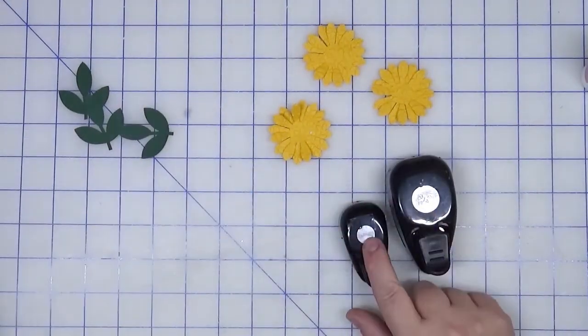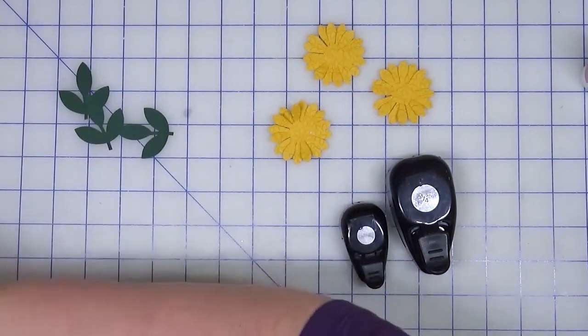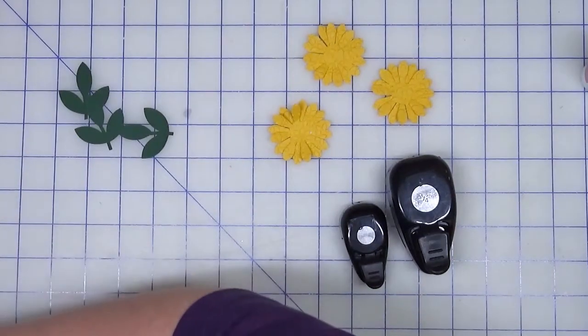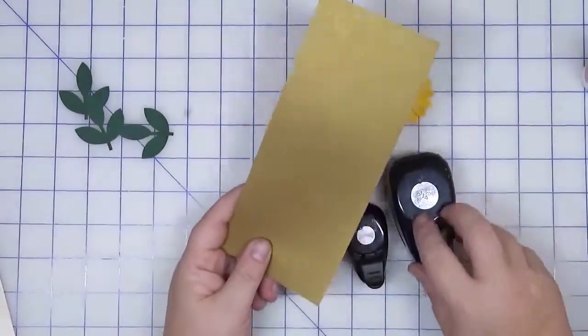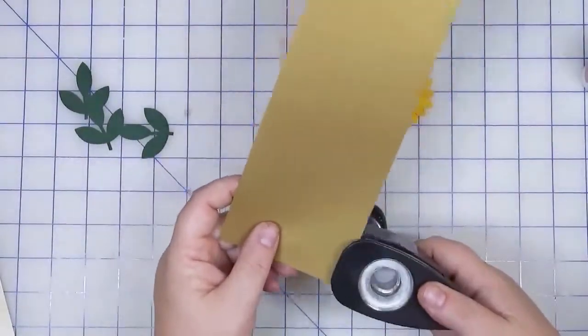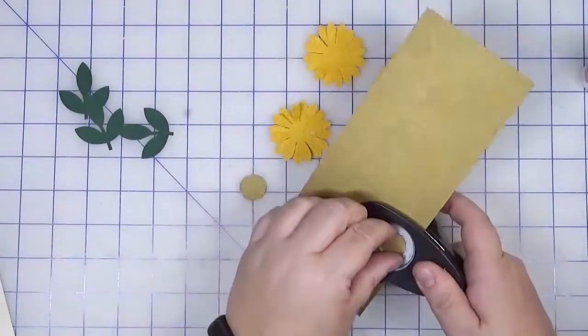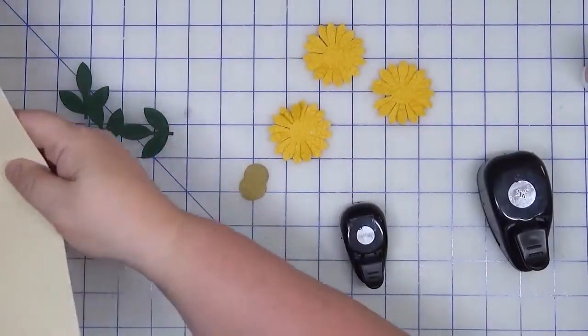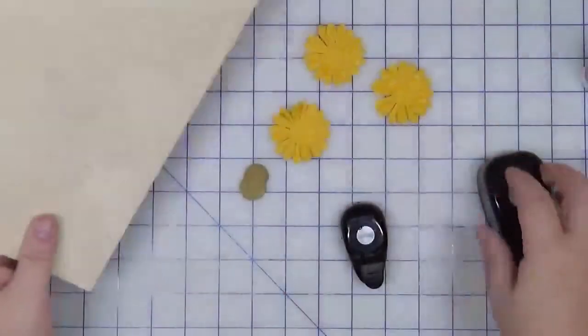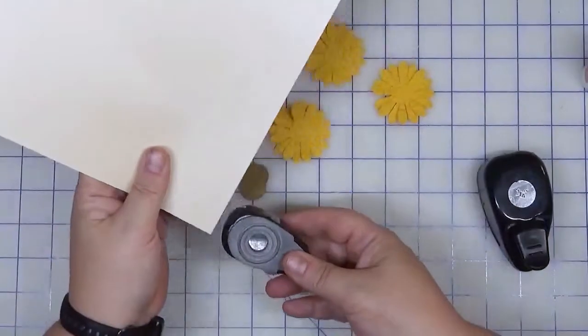We now need a three-quarter inch punch and a half-inch punch. From the bronze or copper, we're going to cut out three of these in the three-quarter, and three. I don't see any smaller champagne pieces, so we're going to cut out three from here.